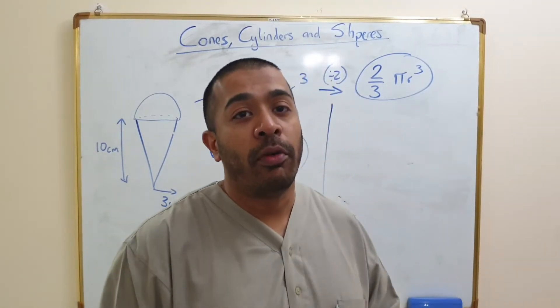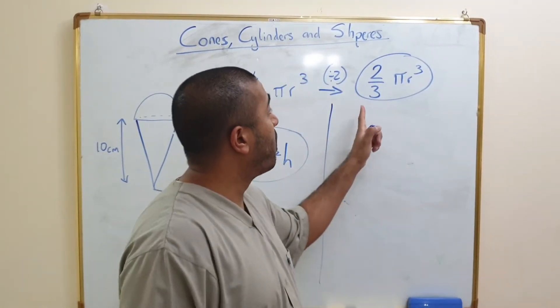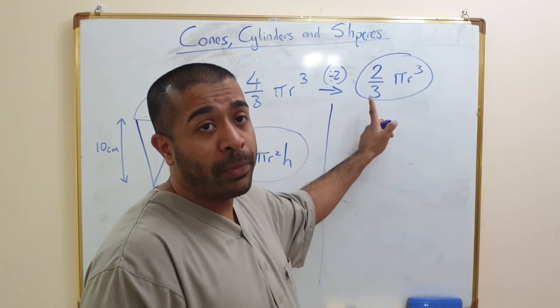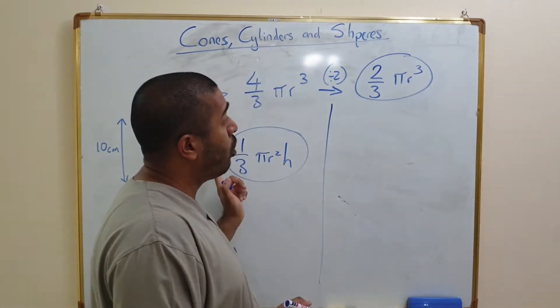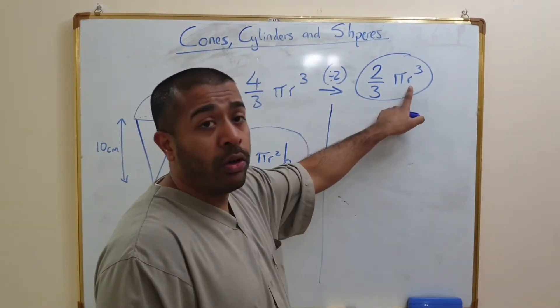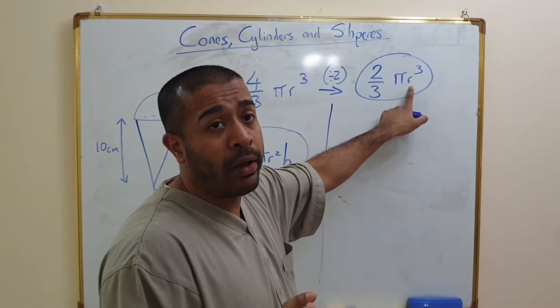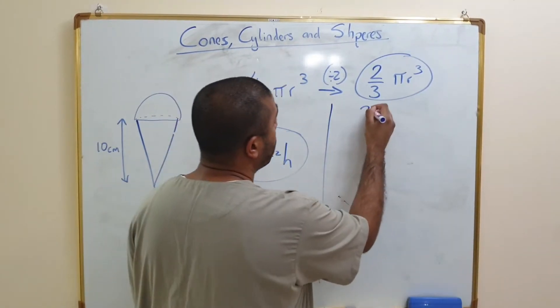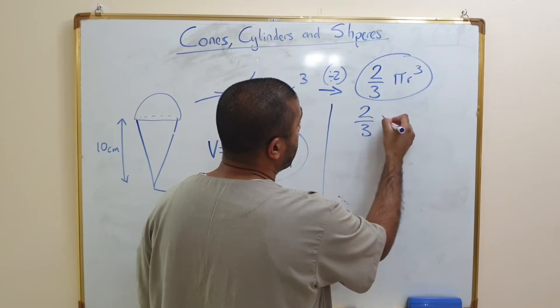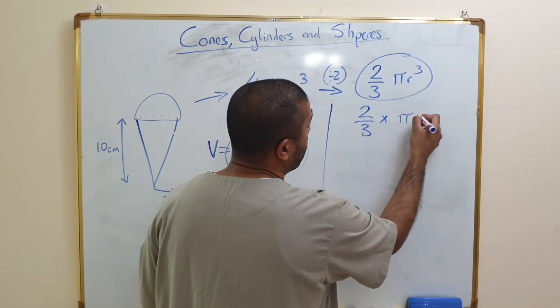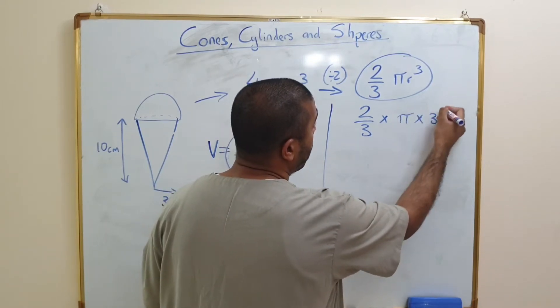So let's start off by finding the volume of the hemisphere. To find the volume of the hemisphere we need to use this formula right here. Now all I'm going to do is substitute the value of the radius, which is the only value that I have got.